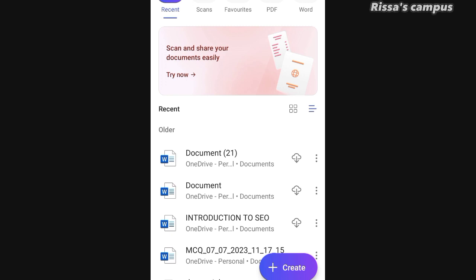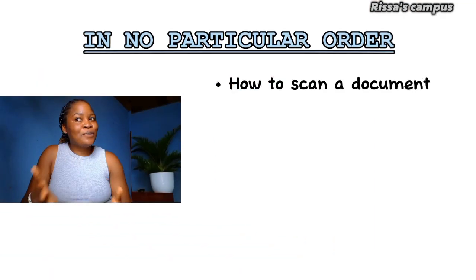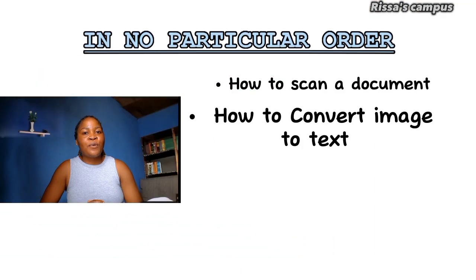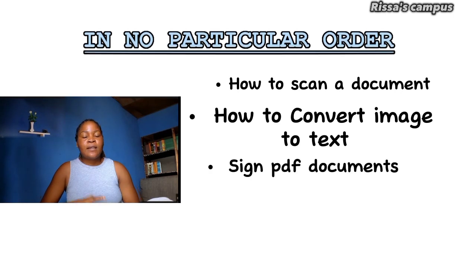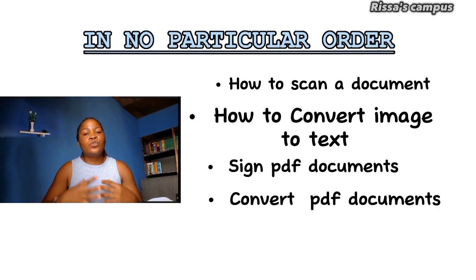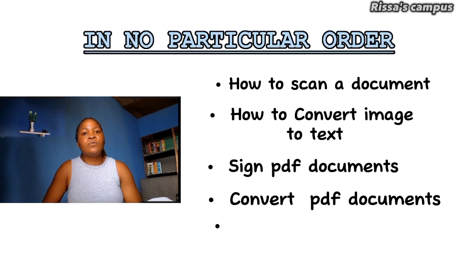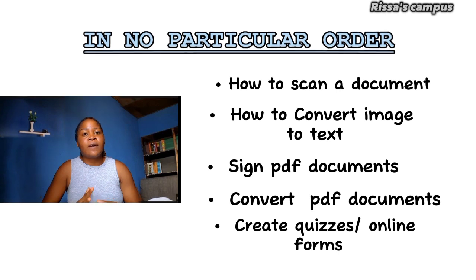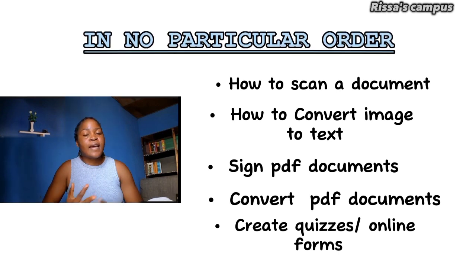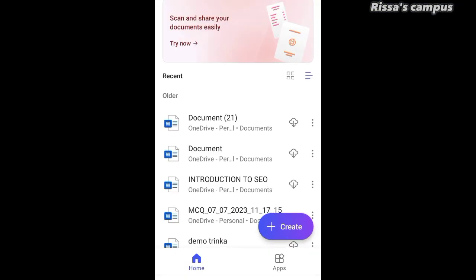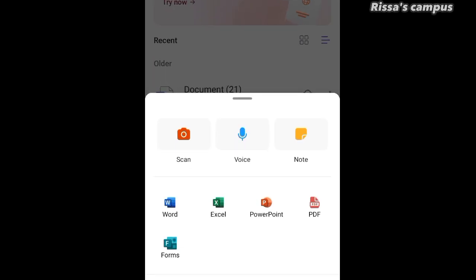Let's go ahead and see how we can use this app. I'm going to show you how to scan any document, how to convert images into text, how to sign PDF documents online, how to convert Word documents to PDF or PDF to Word, and also how to easily make quizzes or multiple choice questions using your mobile phone. We're going to start by creating a quiz — simply click the Create button and click on Forms.